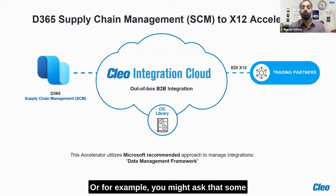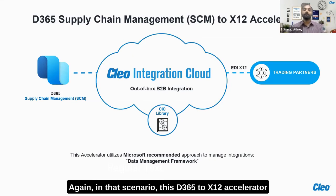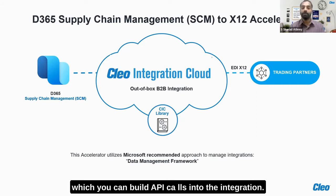For example, you might ask that some of your trading partners host APIs — how can you use this to integrate with them? Again, in that scenario, this D365 X12 accelerator would be the backbone or the baseline on top of which you can build API calls and do the integration.